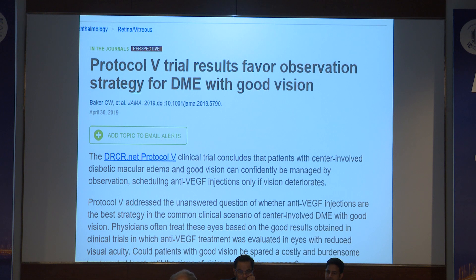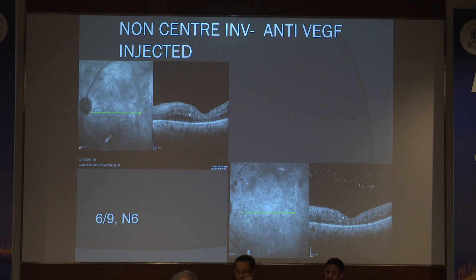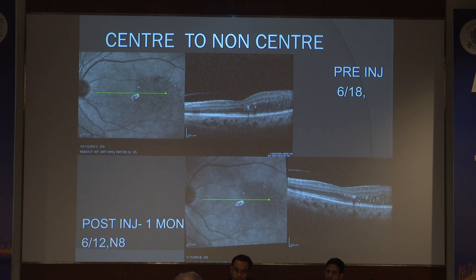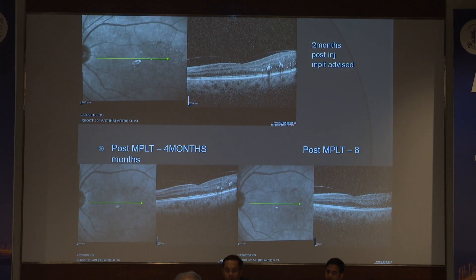Protocol V trial results favor a good observation strategy especially for patients with DME with good vision. A case of non-center-involving edema where anti-VEGF was injected because the patient complained of diminished vision — the patient was N6 post-injection. Another case of center to non-center-involving macular edema: pre-injection 6/18, post-injection one month 6/12 and N8. Two months later the patient was not affordable, so micropulse laser was tried. Micropulse laser does work in certain cases, and in CSR, if retinal thickness is less than 300-350 microns, it may have a role.